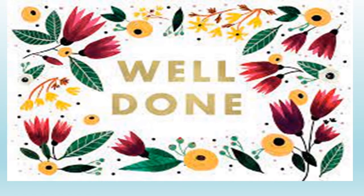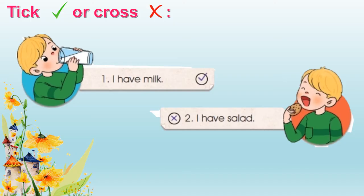Well done! We played very well today! Let's move to the next part. Now, you look at the picture, read the sentence, and put a tick or a cross. For example, number 1: I have milk. Yes, it's rice, so you put a tick. Number 2: look at the picture, the boy is eating a cookie, and then you read the sentence: I have salad. It's not right, so you put a cross. Are you ready? Now, let's start.